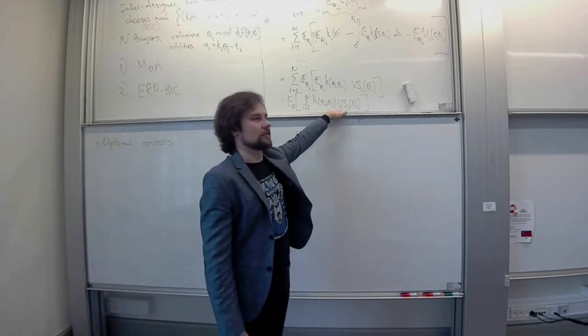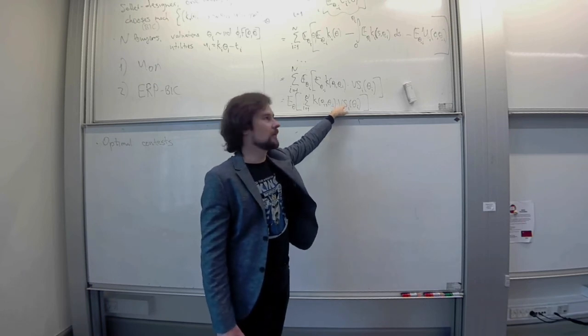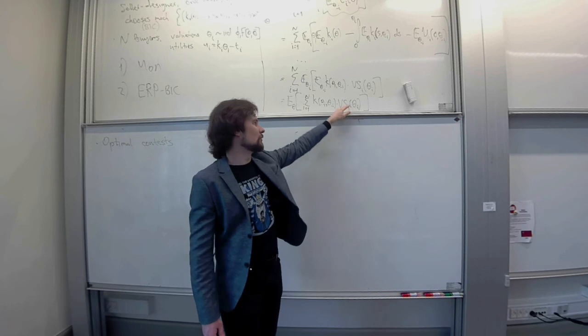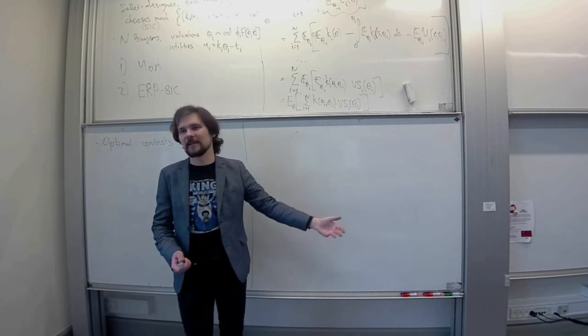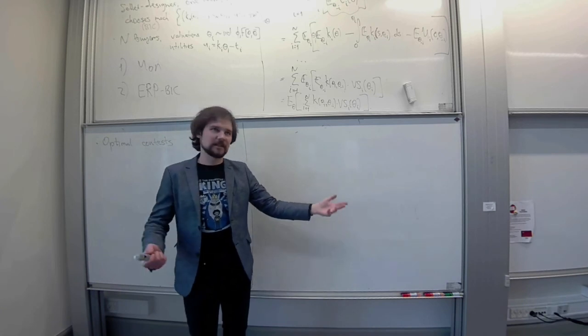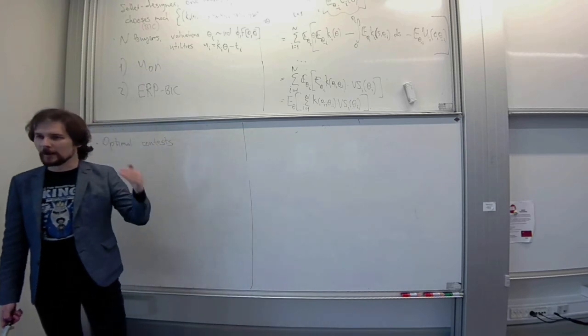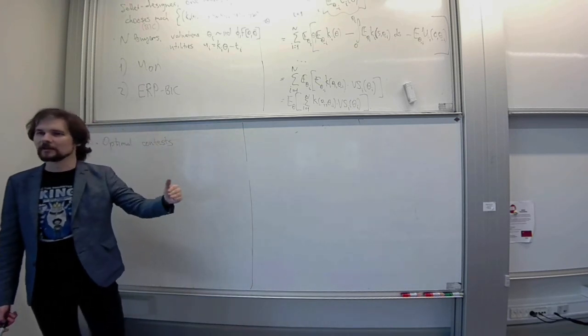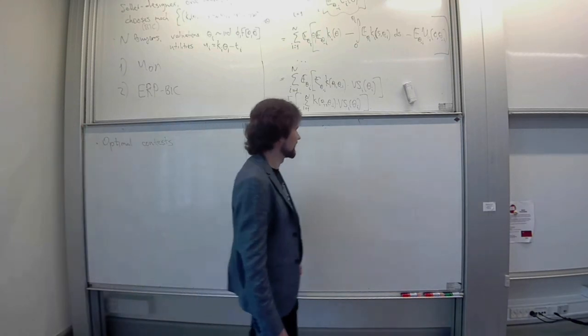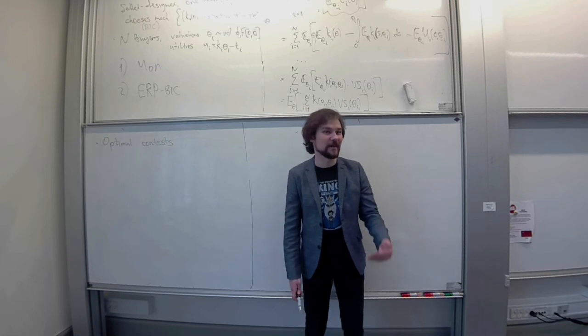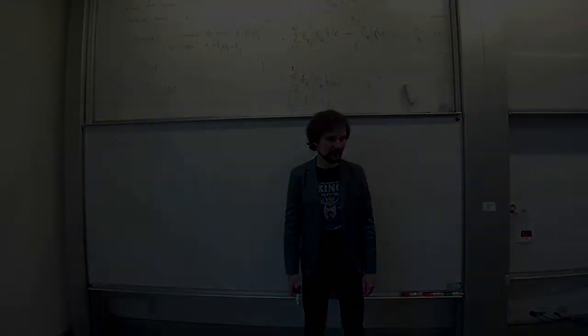If the virtual surpluses, if buyers are symmetric, then these functions VSi are the same for all players. So, if they are monotone, if your distribution of values is good enough, then you still want to select the player with the highest theta. Second price auction does that. And then the reserve price allows you to commit to not sell to the lowest value buyers. How do you set the reserve price? Optimally, yes. Well, this is your object of choice. This is something you maximize over. And it will depend on the distributions of valuations.